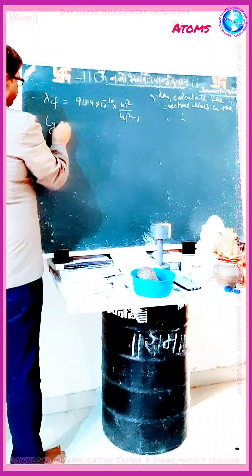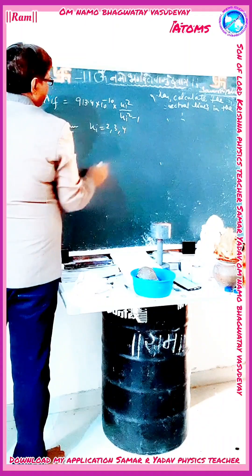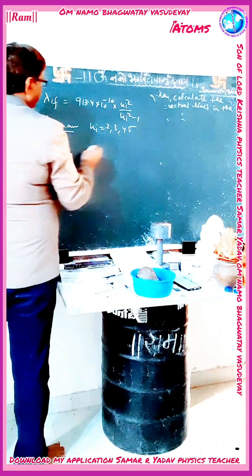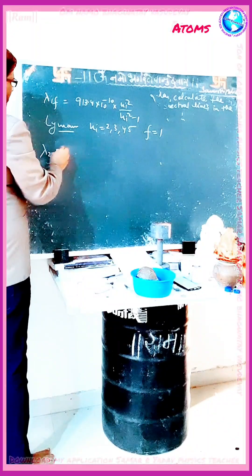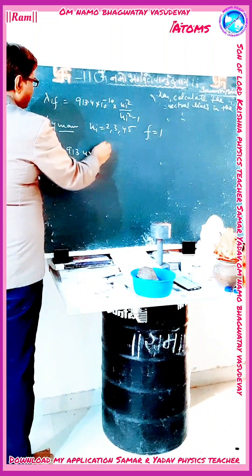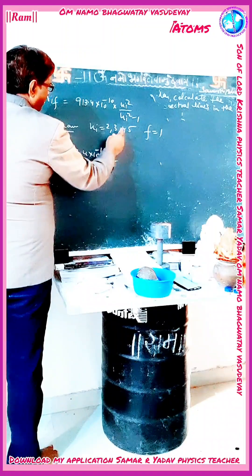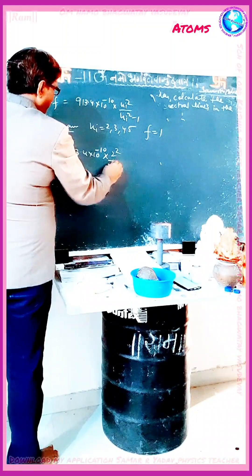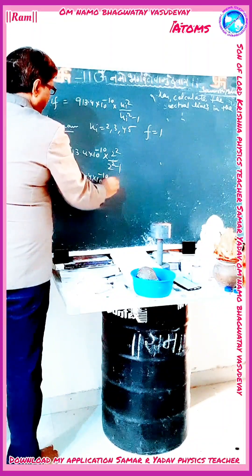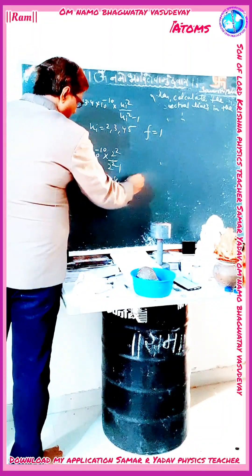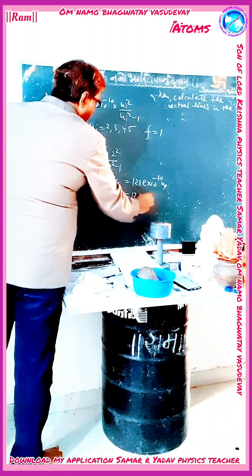For the Lyman series, n_i equals 2, 3, 4, and 5, with n_f equal to 1. For the first line, λ₂₁ is equal to 913.4 × 10⁻¹⁰ into 4 upon (4 minus 1), that is 913.4 × 10⁻¹⁰ into 4 by 3, giving 1218 × 10⁻¹⁰ meters, or 1218 Angstroms.